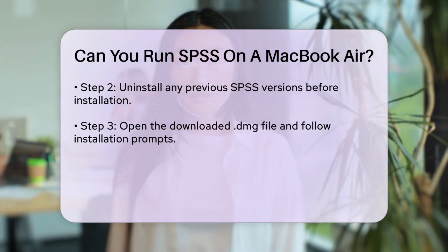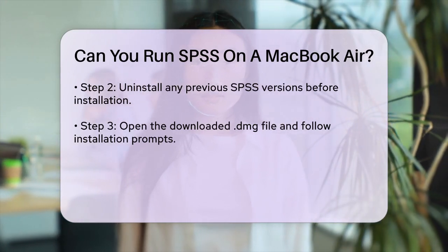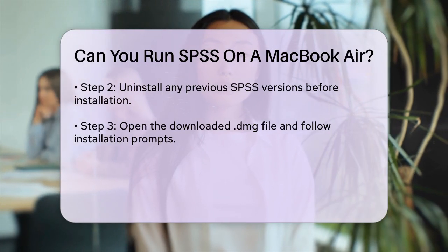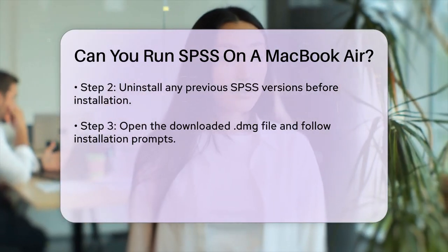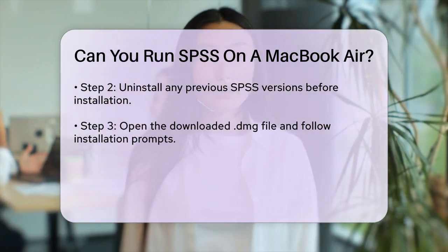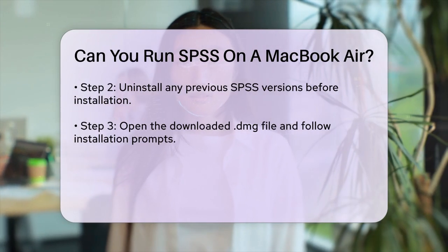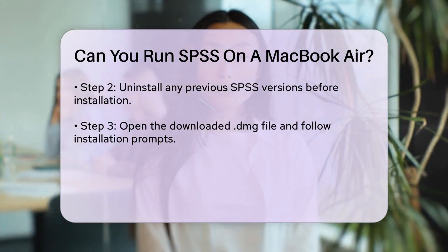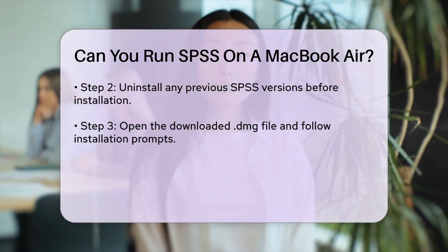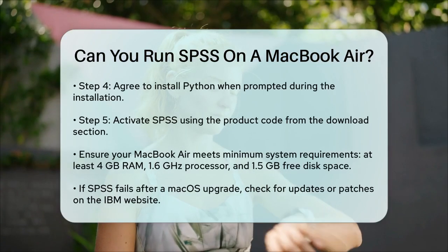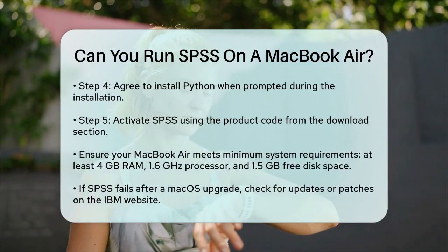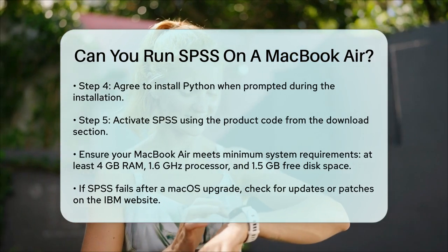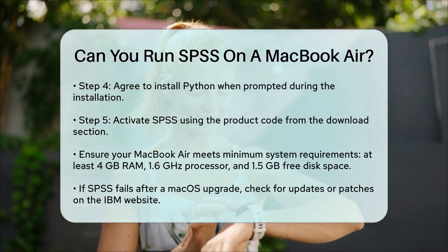In terms of system requirements, your MacBook Air should meet the minimum specs. For SPSS 27.0.1, you'll need at least 4 GB of RAM, though 8 GB or more is recommended. The processor should be at least 1.6 GHz or faster. Additionally, you'll need about 1.5 GB of free disk space for the installation, plus additional space for temporary files.